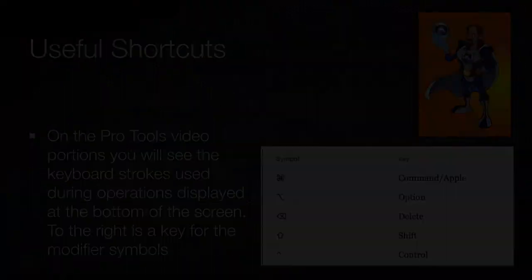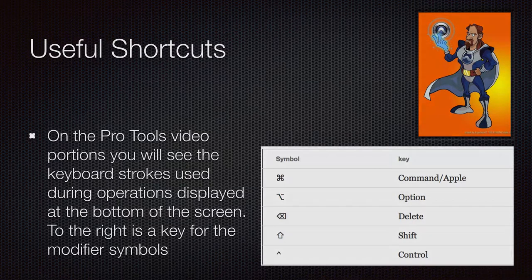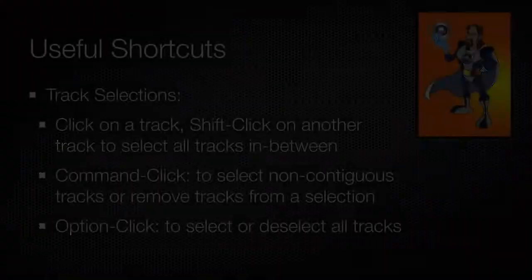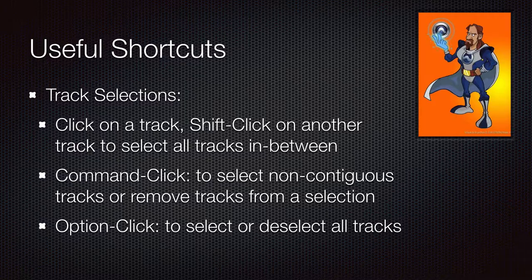During the course of the video you will see my keystrokes displayed at the bottom of the screen, and here is a key to the guide for the symbols you will see. You can use Shift to select tracks in a range, Command to take tracks in and out of a selection or to select non-contiguous tracks, or Option to select all or deselect all.